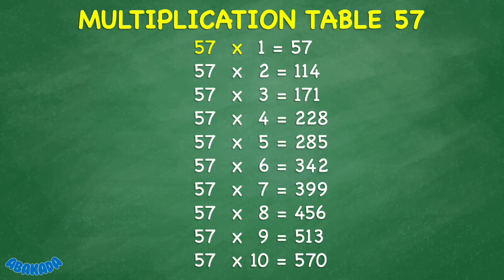57 times 1 equals 57. 57 times 2 equals 114. 57 times 3 equals 171. 57 times 4 equals 228. 57 times 5 equals 285.